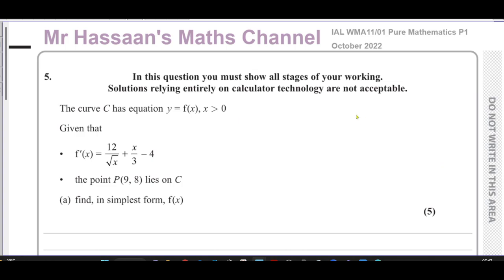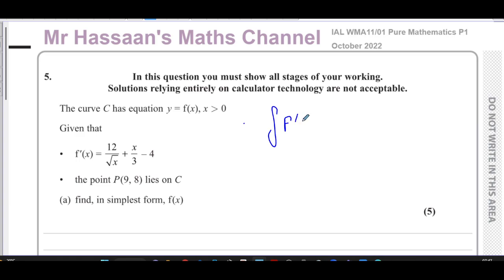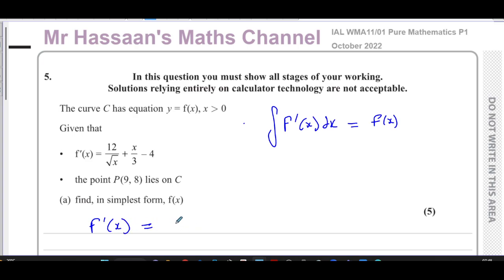To find f(x) from its derivative, we need to understand that if we integrate f'(x) with respect to x, that gives us f(x). So if we integrate this function with respect to x we're going to get the original function. Before we start doing that, I'm going to write f'(x) in a way that's easy for us to integrate.